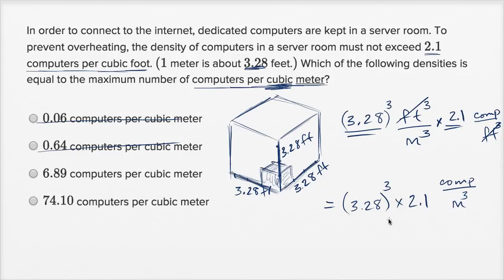Now, we could try to solve this by hand, or solve it some way, but we can estimate it, because these two remaining choices are quite different. What's 3.28 to the third power going to be roughly? Well, 3 to the third power is 27, so this thing is going to be larger than 27.